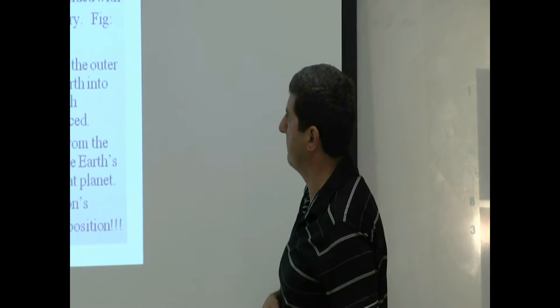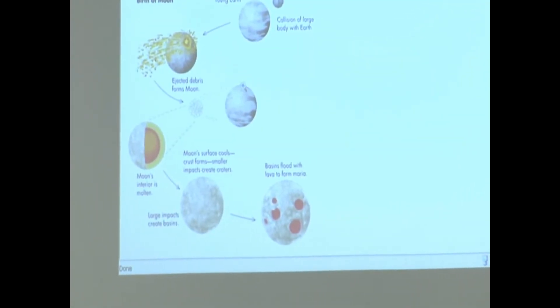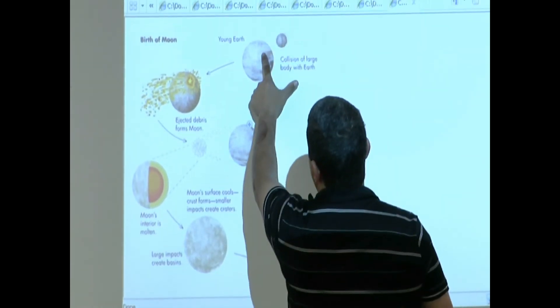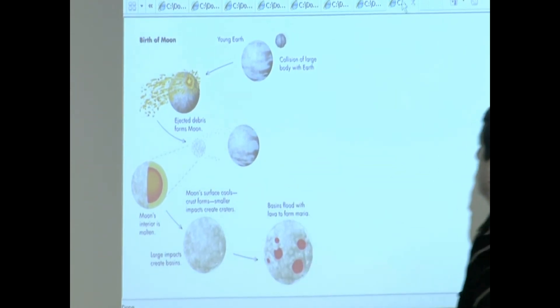Let me show you a couple stuff and then we will end with that. This one shows you similar to that. The Mars-sized planetesimal come, spews out the material, and then it forms the moon.